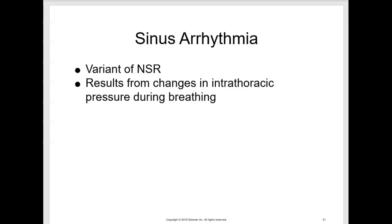Sinus arrhythmias are a variant of normal sinus rhythm. It results from changes in the intrathoracic pressure during breathing. The heart rate increases slightly during inspiration and decreases slightly during exhalation. It is an irregular rhythm that is frequently observed in healthy adults. Sinus arrhythmia has all the characteristics of normal sinus rhythm except for its irregularities. The PP and RR intervals vary, with the differences between the shortest and longest interval being greater than 0.12 seconds.